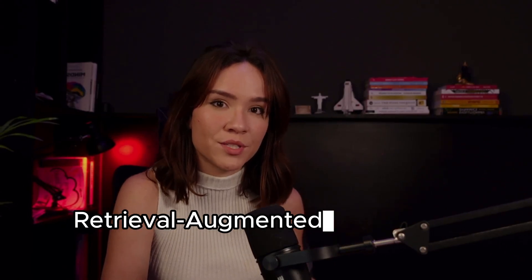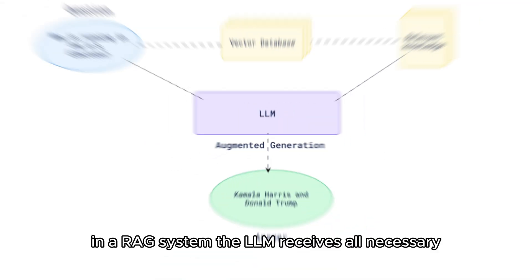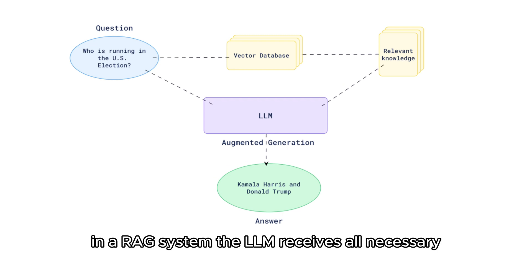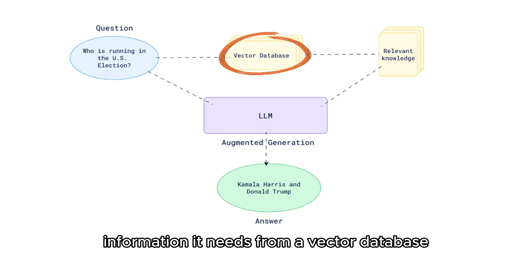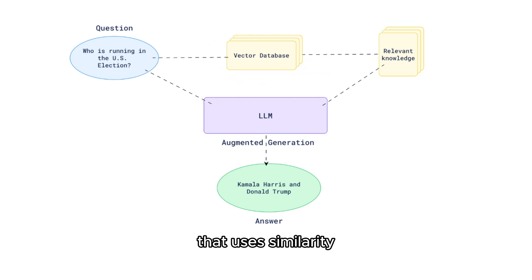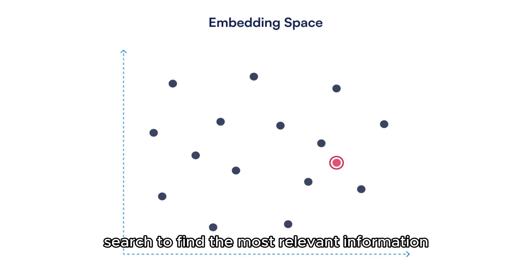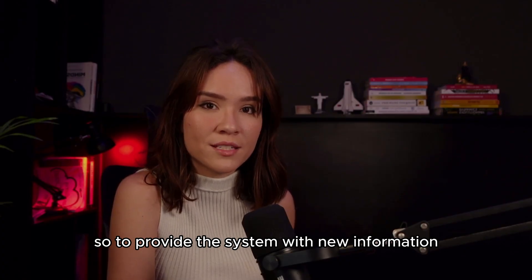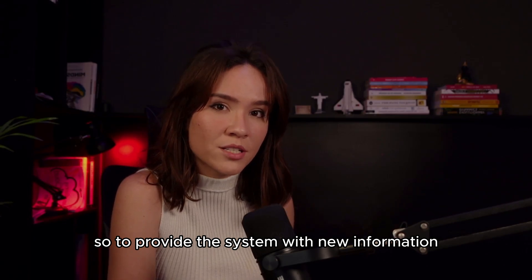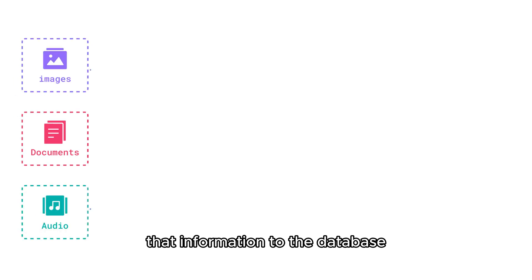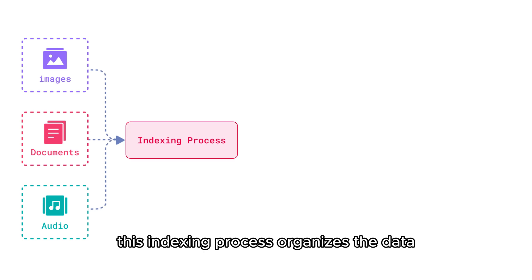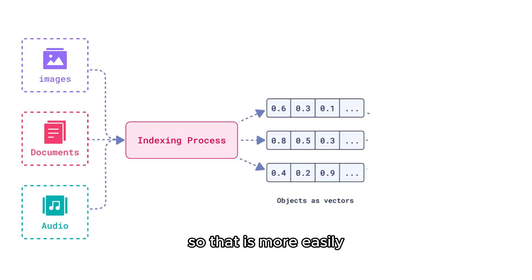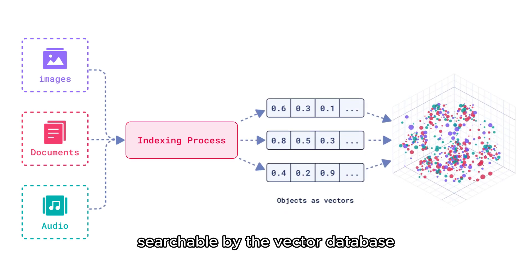For this, we use something called Retrieval Augmented Generation, a.k.a. RAG. In a RAG system, the LLM receives all necessary information from a vector database that uses similarity search to find the most relevant information to answer your question. So to provide the system with new information, you would only need to add, or index, that information to the database. This indexing process organizes the data so that it's more easily searchable by the vector database.